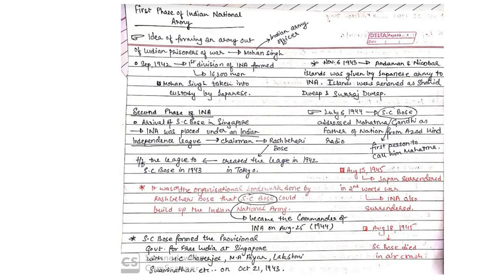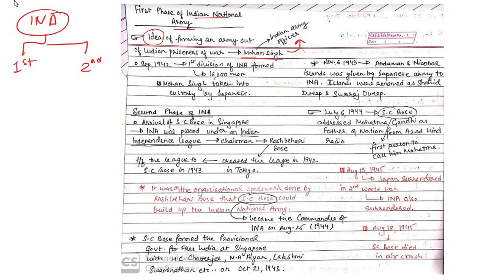Now comes the Indian National Army and Subhash Chandra Bose. The INA can be studied in two phases. The first phase: the idea originated with Mohan Singh, an Indian Army officer. In 1942, the first division of the INA was formed with 16,300 men recruited. Mohan Singh was later taken into custody by the Japanese, ending the first phase.